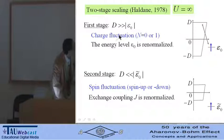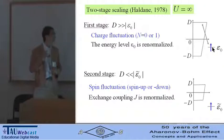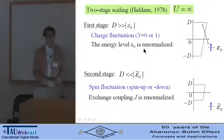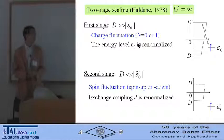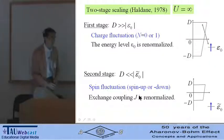On the first stage, charge fluctuation, the number of electrons in the quantum dot is unity or zero, and energy level in the quantum dot epsilon naught is renormalized. On the second stage, after the charge fluctuation is quenched, spin fluctuation is taken into account and exchange coupling J is renormalized.